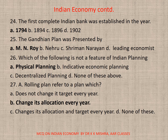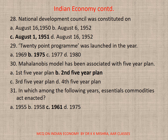Question 26: Which of the following is not a feature of Indian planning? A. Physical Planning, B. Indicative Economic Planning, C. Decentralized Planning, or D. None. The correct option is A. Physical Planning. Question 27: A rolling plan refers to a plan which — correct option is B. Changes its allocation every year. Question 28: National Development Council was constituted in — correct option is C. August 1, 1951.